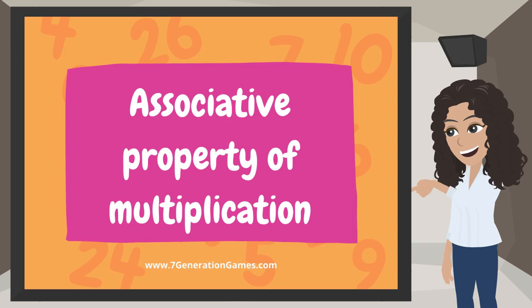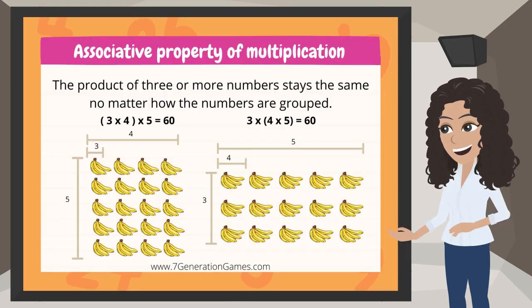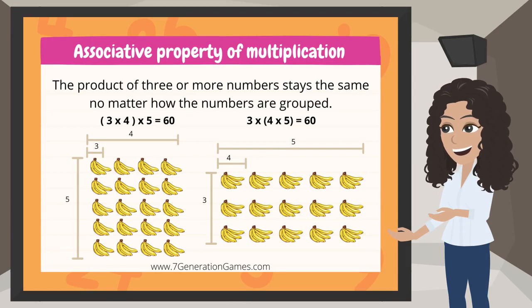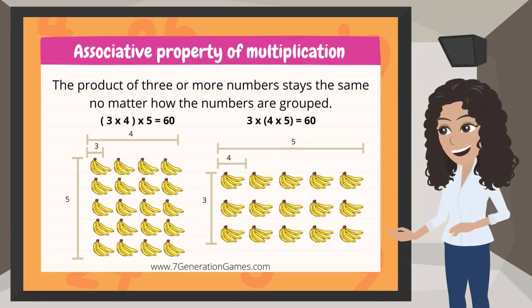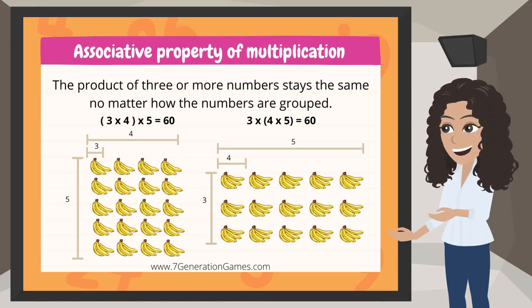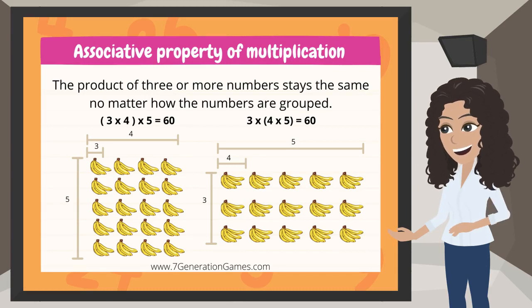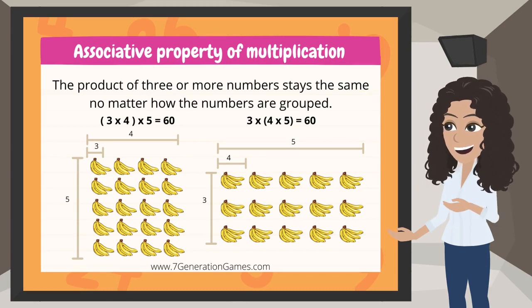Associative Property of Multiplication: the product of three or more numbers stays the same no matter how the numbers are grouped. For example, 3 times 4 times 5 equals 60. In the example on the left, 3 times 4 is multiplied first, and then that product is multiplied times 5, which equals 60.